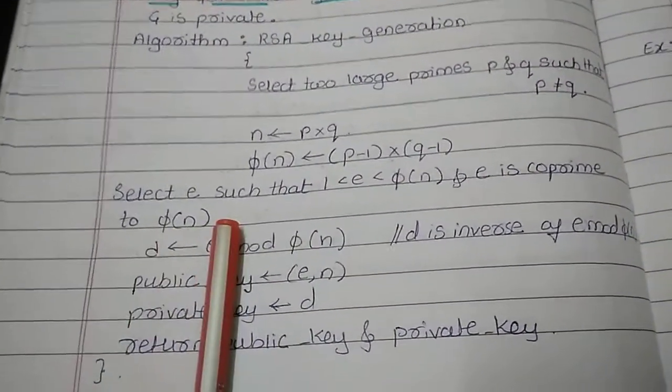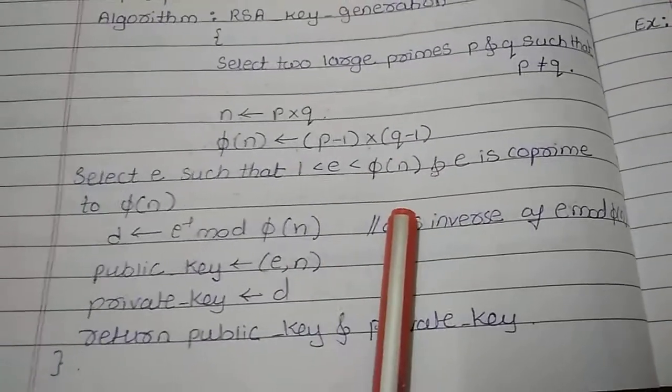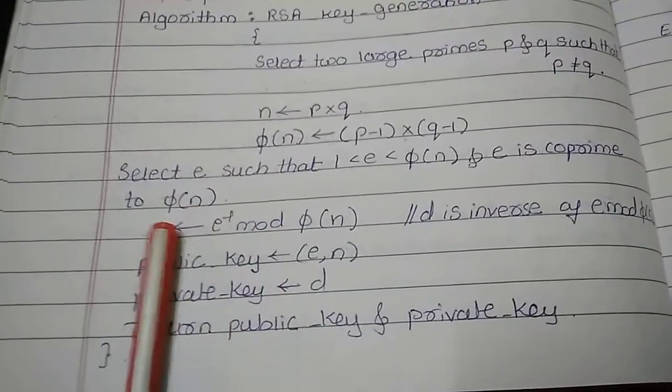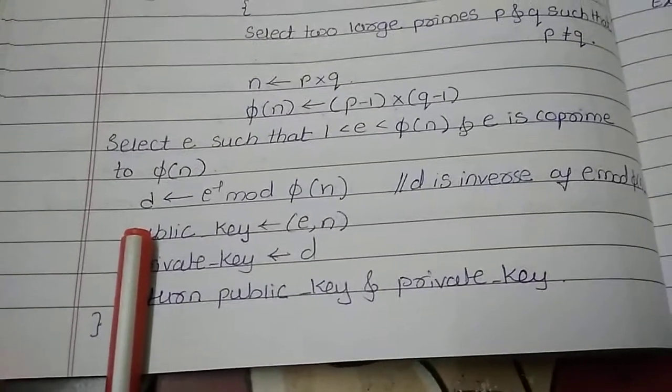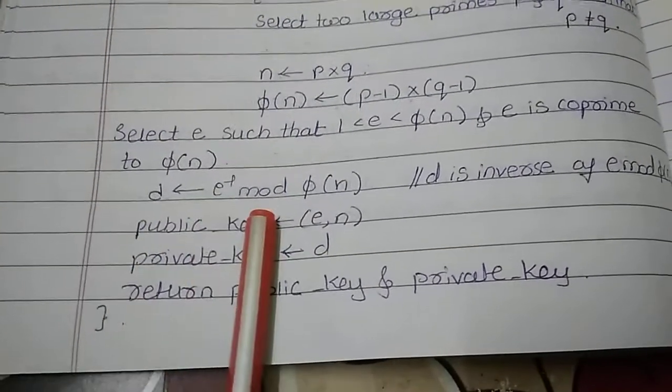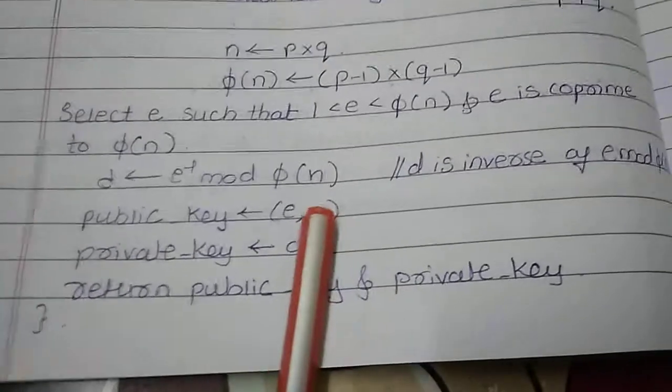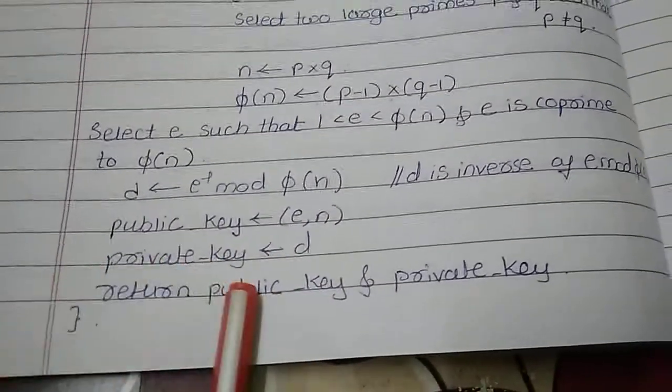Select the value of E such that 1 is less than E and E is less than phi of N, and E is coprime to phi of N. Then for decryption purpose which is inverse of E mod N, you have to take E inverse mod phi of N. After this we obtain a public key which is E and N and private key D.